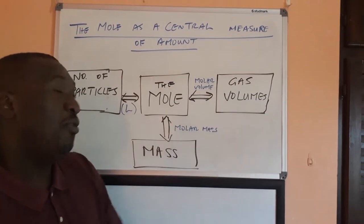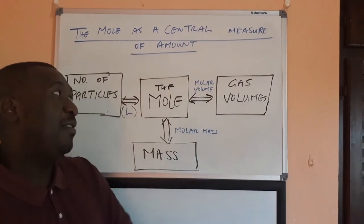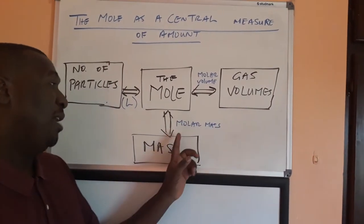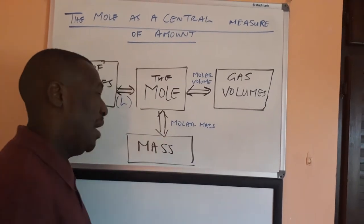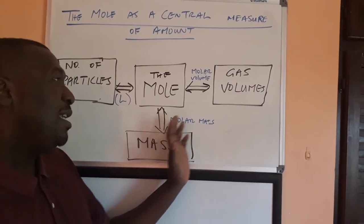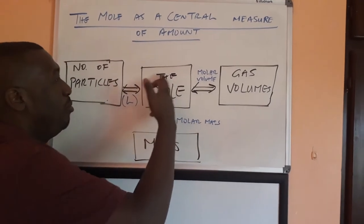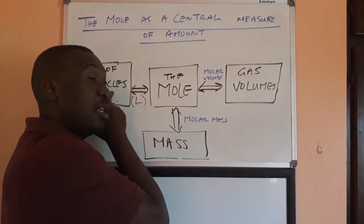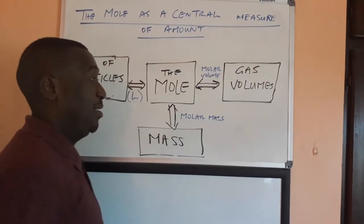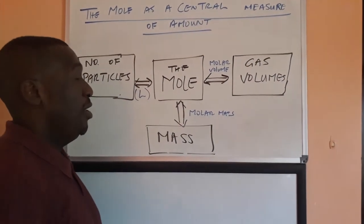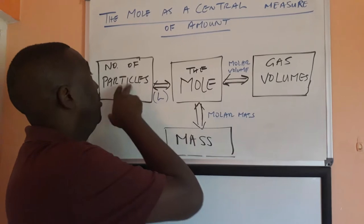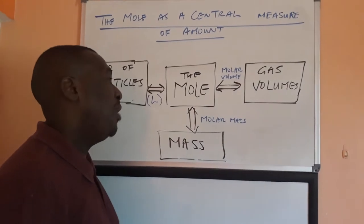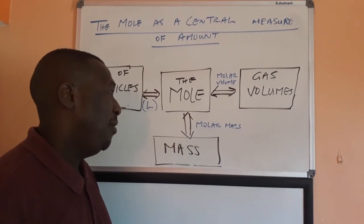The mole is also related to gas volumes, and that relationship is defined by molar volume. It's related to masses of substances, and that relationship is defined by molar mass. We can go through the mole to convert a mass of a substance to the number of particles or volume of gas. That's why we call it the central measure of amount.